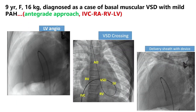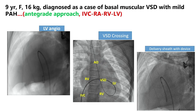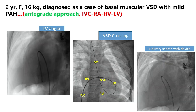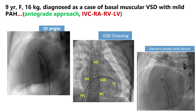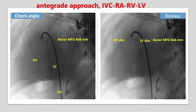This is another nine-year-old case using the antegrade approach, where we took the delivery sheath through the IVC approach. We crossed the VSD from RV to LV and closed with a Coro MFO 8×6 mm device.